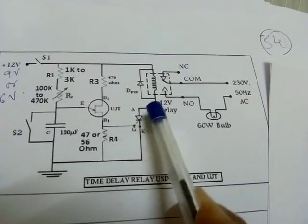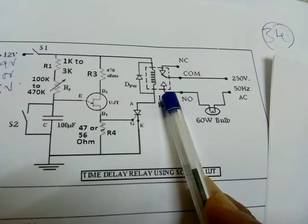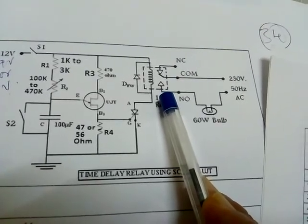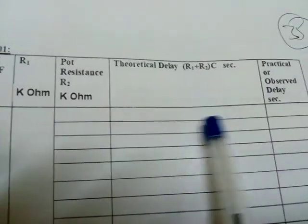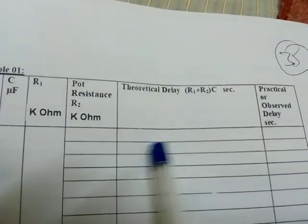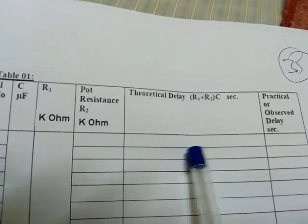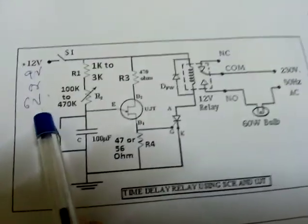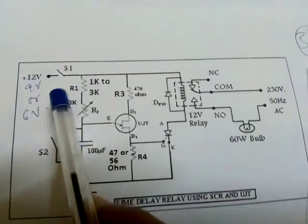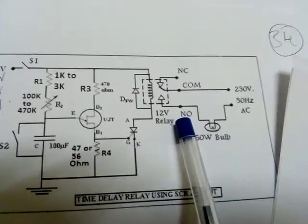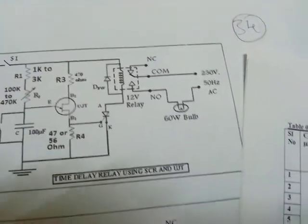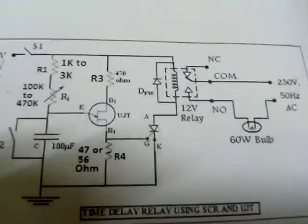After some time, the bulb will glow. As soon as bulb glows, stop the stopwatch and note down the time delay. Here, practical delay. This is, we will use the formula and calculate. For pot is equal to 0, as soon as you switch on S1, immediately, within fraction of second, bulb will glow. It is obvious, because the delay will be less.